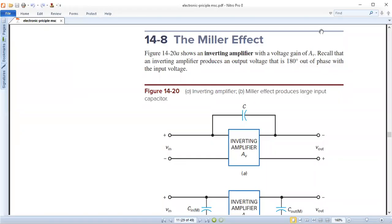In the previous session, we discussed a phenomenon called the Miller effect. In other words, the amplifier is very significant. The figure shows an inverting amplifier with a voltage gain of KV. We call that inverting amplifier produces an output by 180 degree phase shift. That's what we call this.